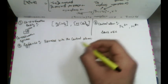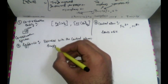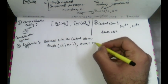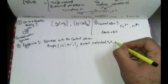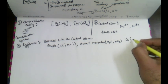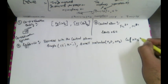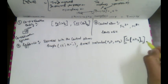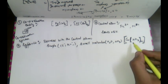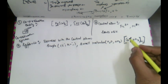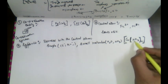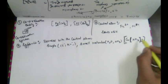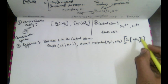Ligands may be simple ions such as chloride, or small molecules such as H2O and NH3. For example, in a compound where copper is the central atom — also known as the Lewis acid — the NH3 molecules make copper stable. So NH3 is acting as a ligand, bounded with the central atom copper.